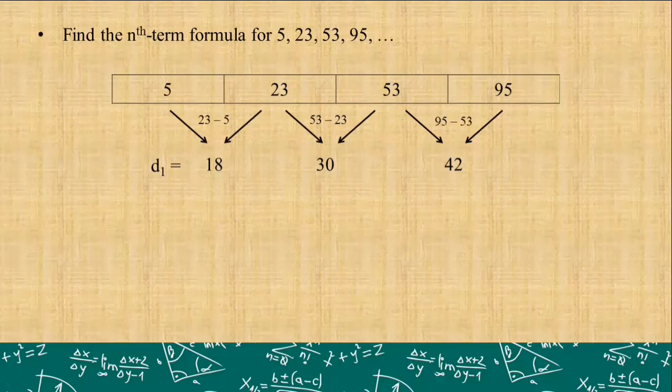As you can see, d₁ is 18, 30, and 42. Obviously, they are different. This is what I mentioned earlier - when the first difference is not yet equal to each other, we have to continue the subtraction. Otherwise, if d₁ values are all the same, say for example all d₁ are 18, it means our original given sequence is an arithmetic sequence and 18 is the common difference. But as we see here, the first differences are different, so we continue subtracting.